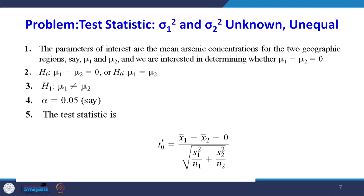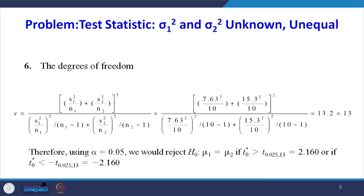Alpha is 5%. The formula for the test statistic is: t0 equals (X1 bar minus X2 bar) divided by the square root of (S1 square by N1 plus S2 square by N2). Substituting the values of S1 square, N1, S2 square, and N2, we get the degrees of freedom approximately equal to 13.2, so the degrees of freedom is 13.